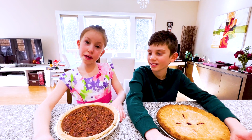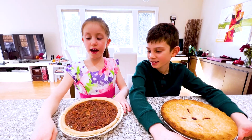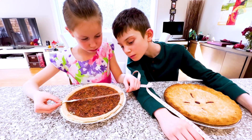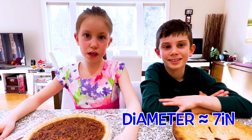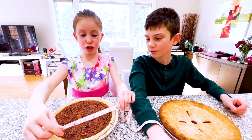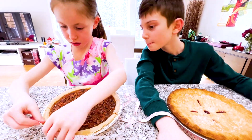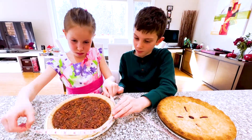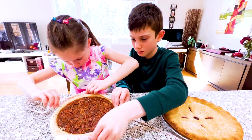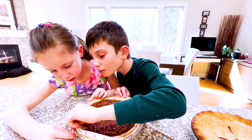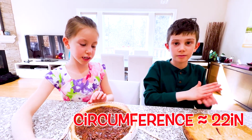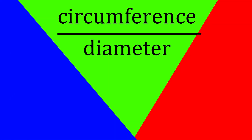What about my pecan pie? Let's measure that. I measured the diameter and it was about 7 inches. Now we need to measure the circumference. The circumference is about 22 inches. Let's divide circumference by diameter again: 22 divided by 7 is about 3.14.